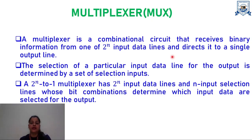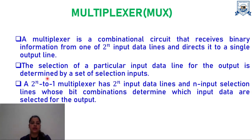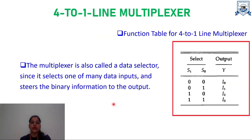A multiplexer has many input data lines but only a single output line. The selection of a particular input data line from many input data lines for the output is determined by a set of selection inputs. For example, if we have a 2^n x 1 multiplexer, then it means it will have 2^n input data lines where n represents the number of selection lines. The bit combinations of selection inputs will always determine which input data is selected for the output.